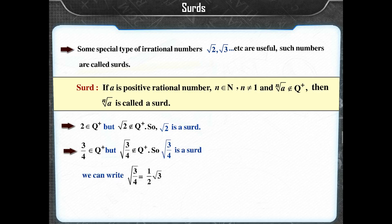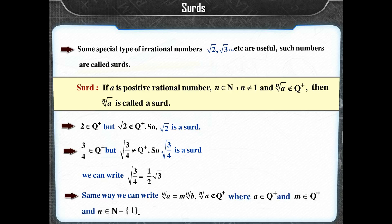We can write square root of 3/4 as (1/2) times square root of 3. In the same way, we can write the nth root of A as M times the nth root of B, where the nth root of A does not belong to Q+, A belongs to Q+, M belongs to Q+, and n belongs to N minus 1.